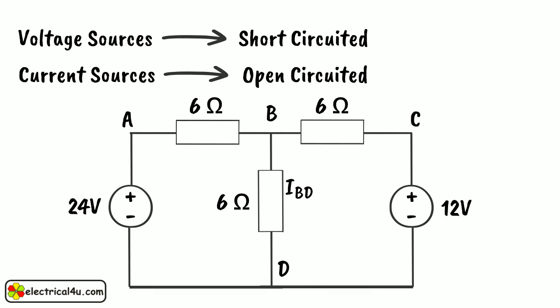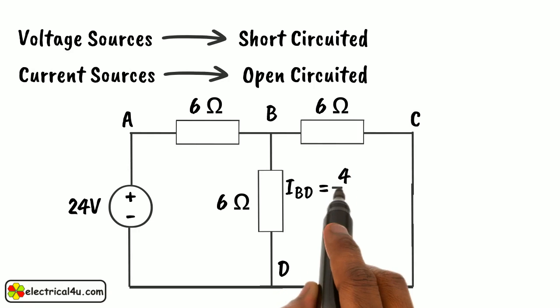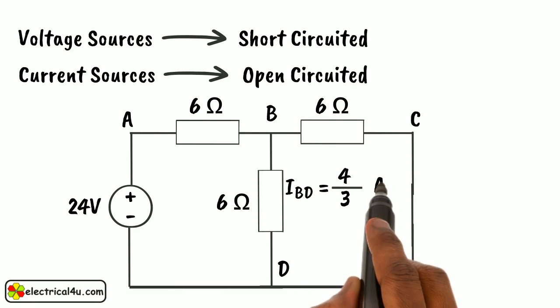For that, first the 24V source is taken by short-circuiting the 12V source, as shown here. Now, by applying any simple circuit law, we will find that the current through branch BD is 4 by 3 amperes.